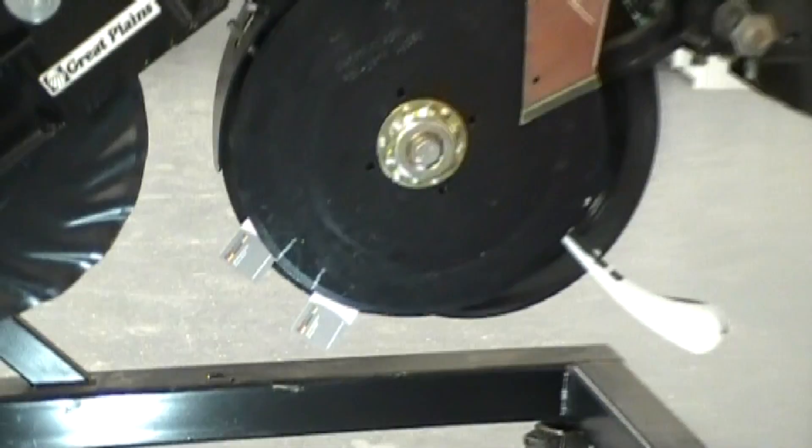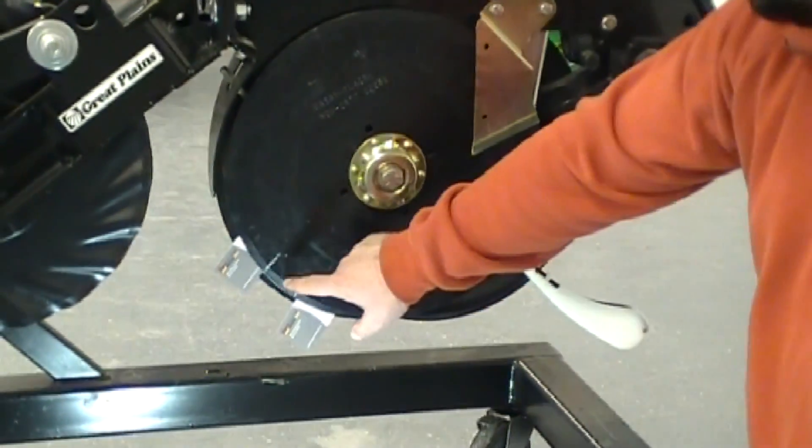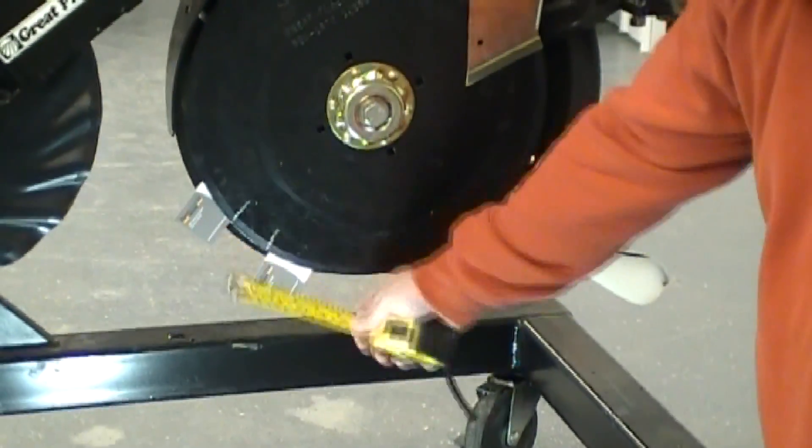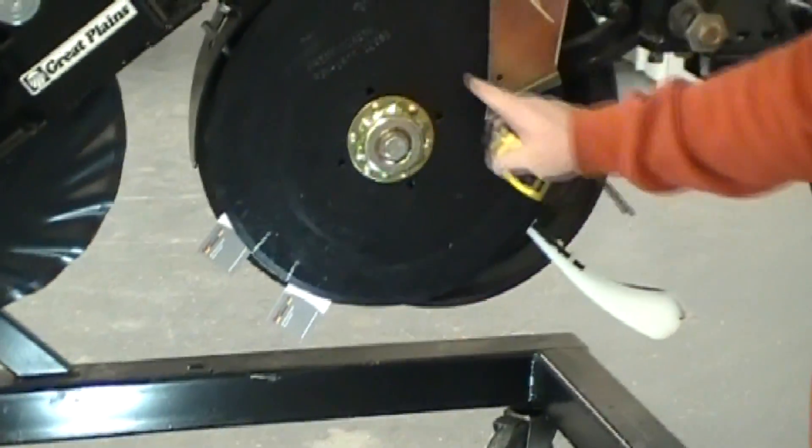Because of that and the thickness of the disc, there's going to be a little bit different setting here. In this case, we're going to shoot for an inch to an inch and a quarter of contact area. And just like the Deer or Kinsey units, we're going to check that at multiple locations around the disc.